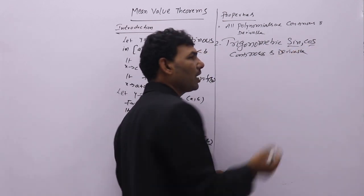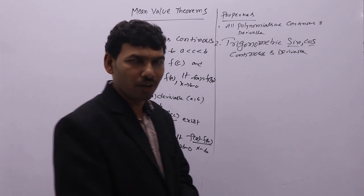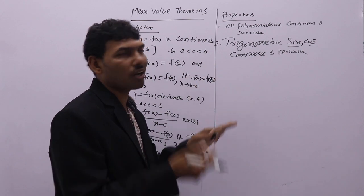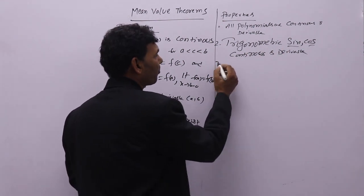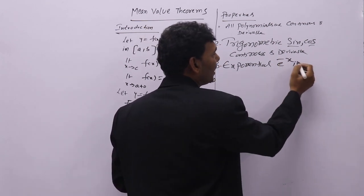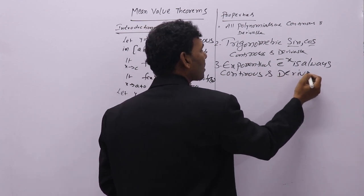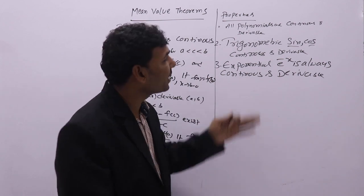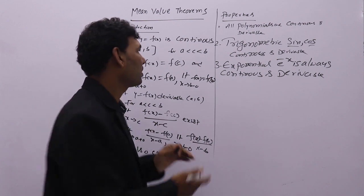Sin and cos values lie between −1 and +1. If you check a trigonometric table, sin and cos never have infinity values — for any value of θ, sin θ cannot be infinity. That means sin and cos always have finite values in any interval, so they are always continuous and derivable. Property 3: Exponential functions like e^(−x) are always continuous and derivable, because e^(−∞) = 0, so infinity never arises.